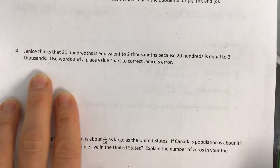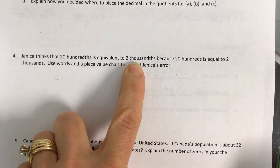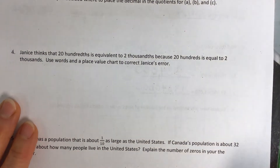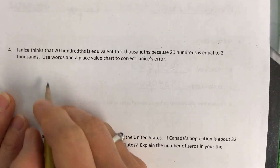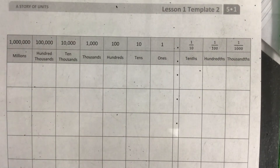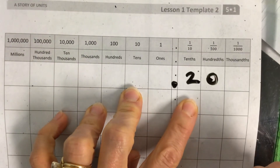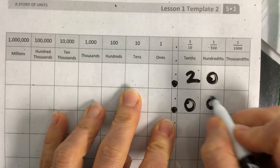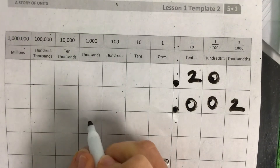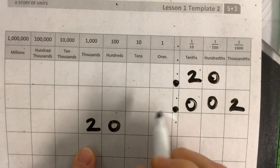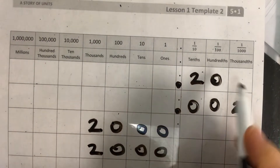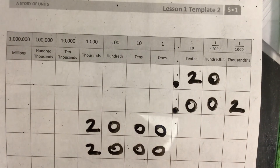The last two problems: Janice thinks that 20 hundredths is equivalent to 2 thousandths. Use words and a place value chart. If you show 20 hundredths on the place value chart — here's the hundredths place — and fill in the zeros, is that equal to 2 tenths? Yes, it is, so in that case she was right. But she's incorrect in her original statement because 20 hundredths and 2 thousandths don't have the same value. If you put them on the place value chart, you can see that.